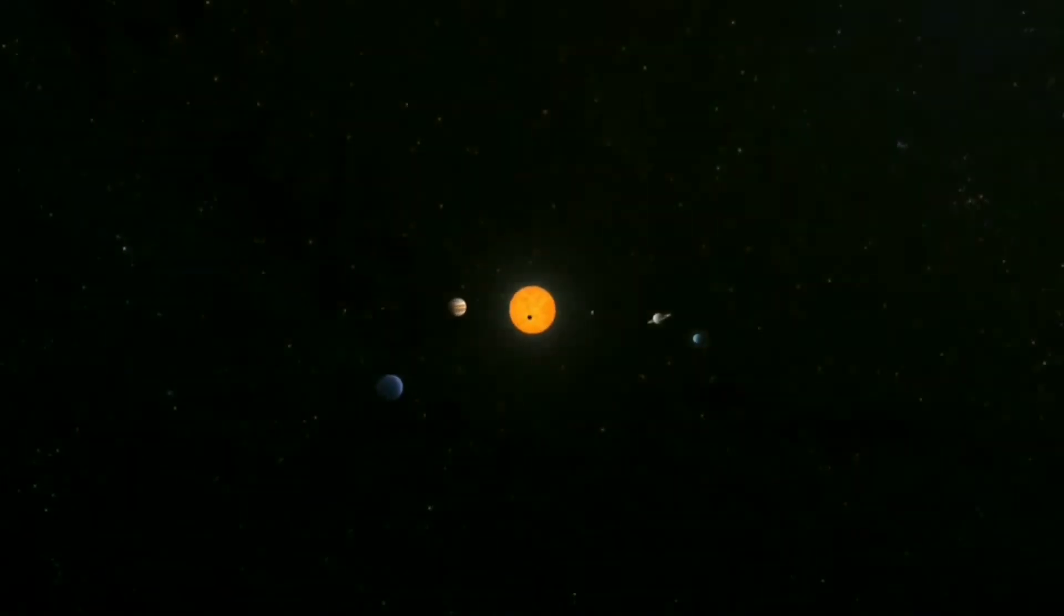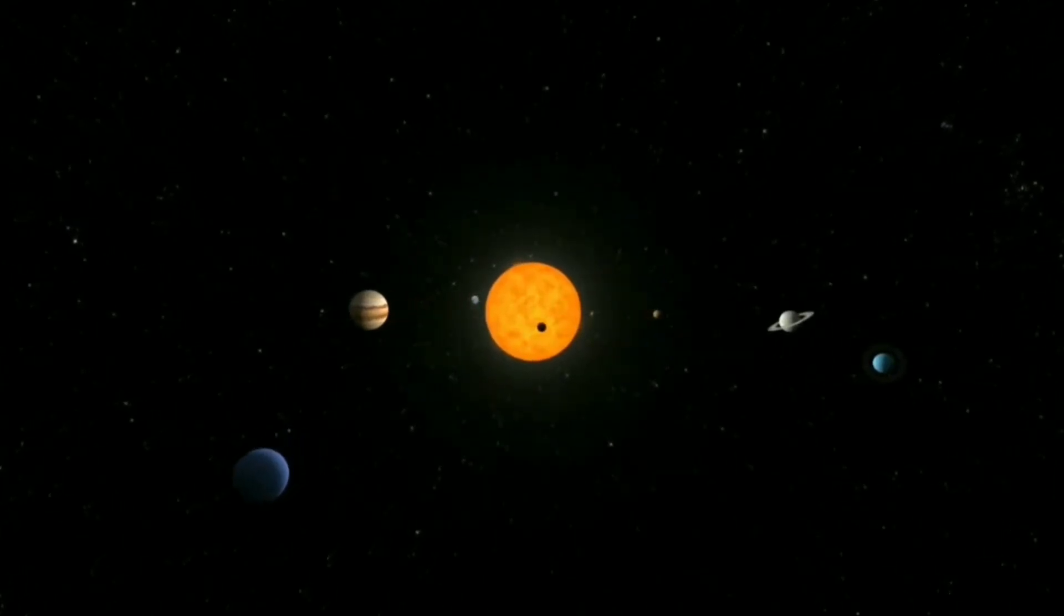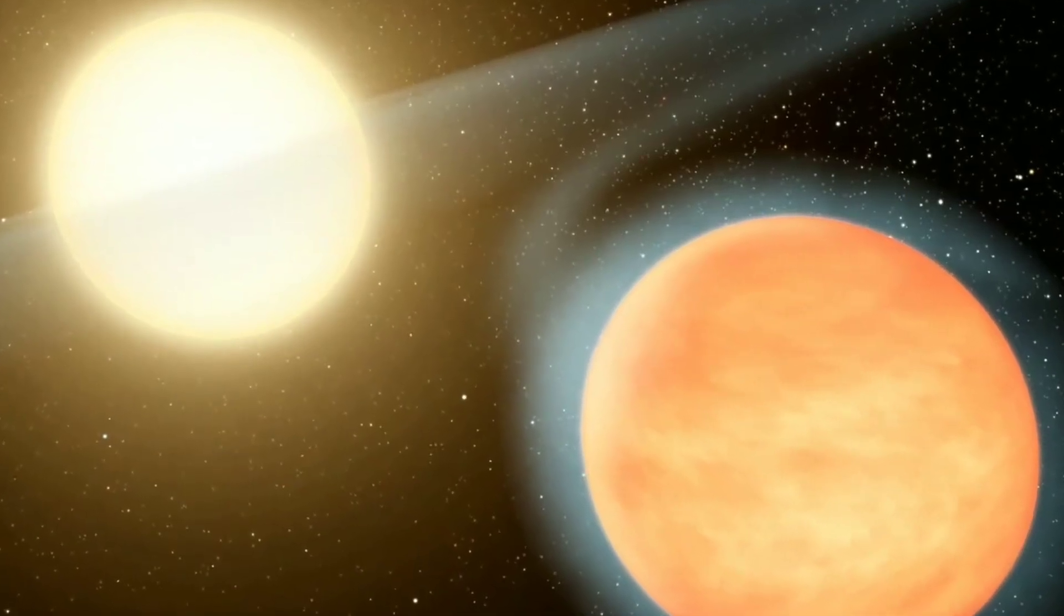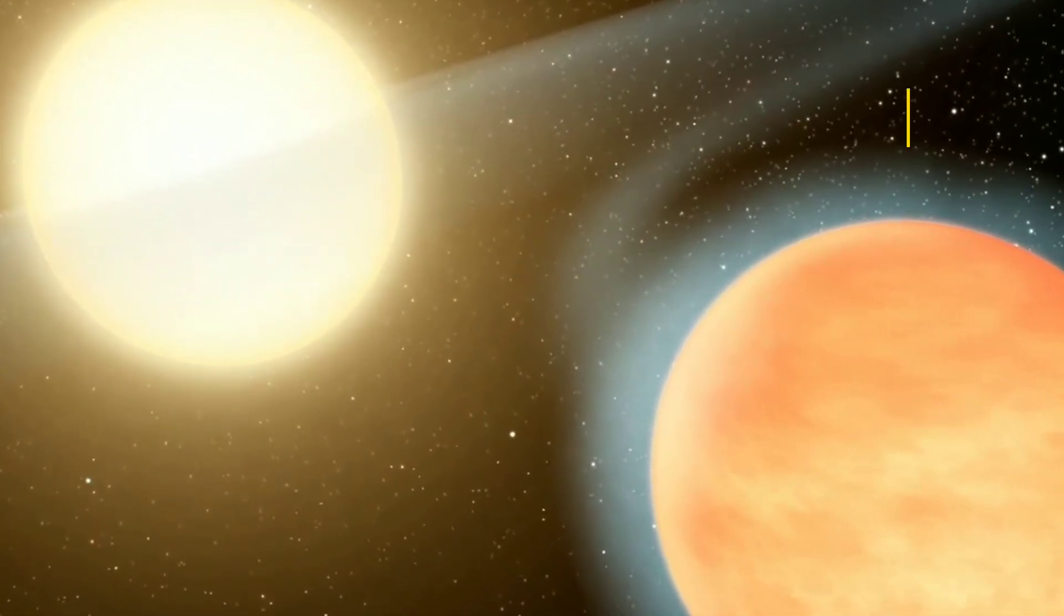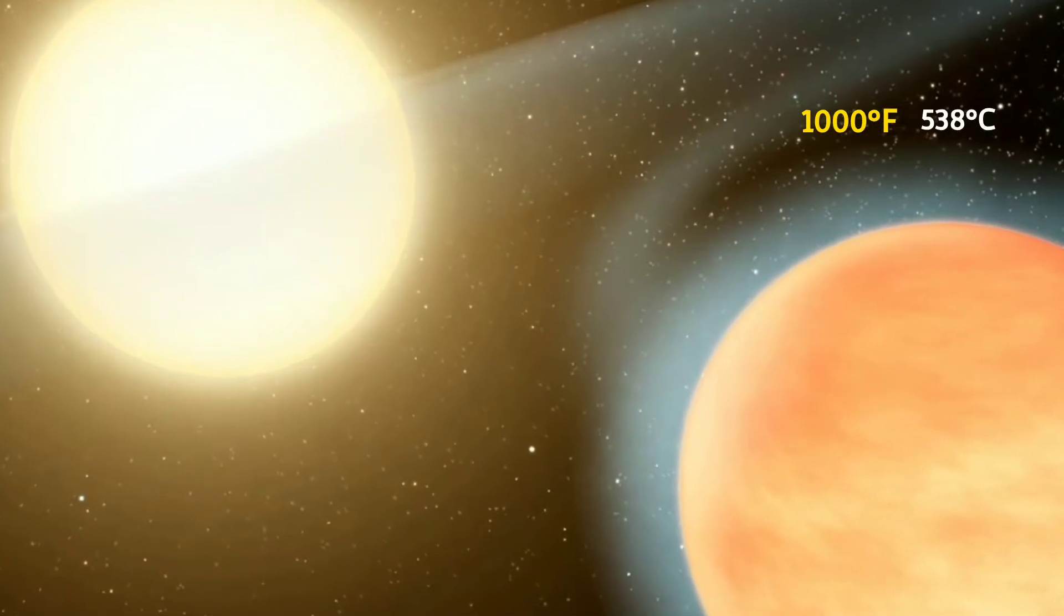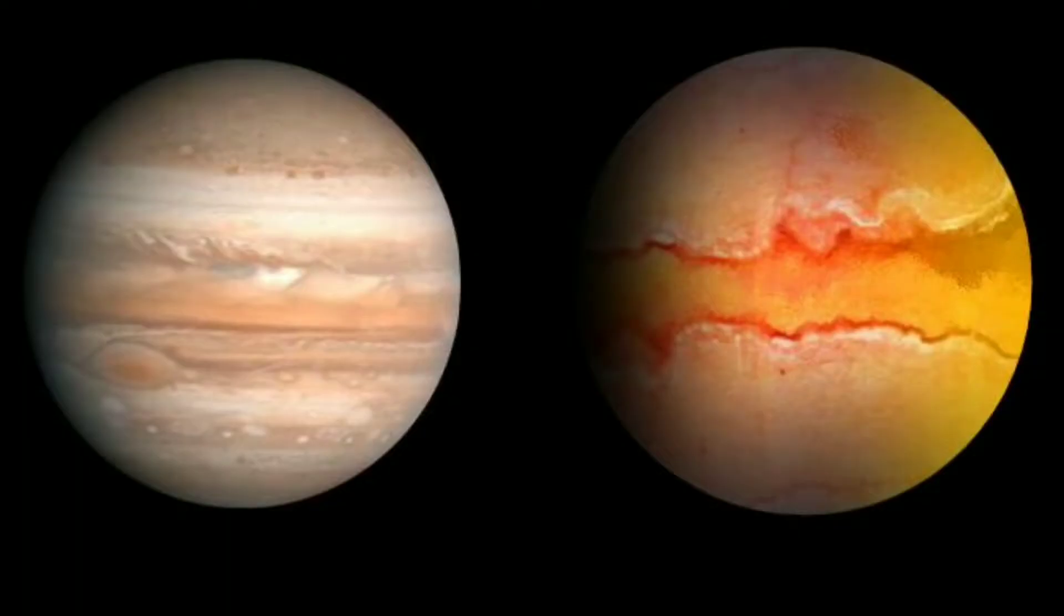This planet is a gas giant which orbits a sun-like star. It orbits quite close to its star, about 1/9th of the distance of Mercury from the sun. Thus its atmospheric temperature is around 1000 degrees Fahrenheit or 538 degrees Celsius. It is nearly half as massive as Jupiter and its diameter is about 1.2 times greater than Jupiter's diameter.